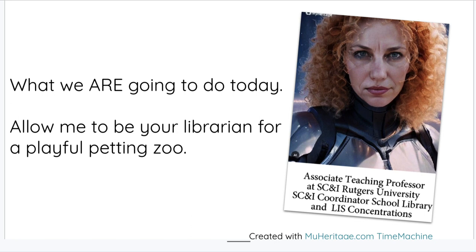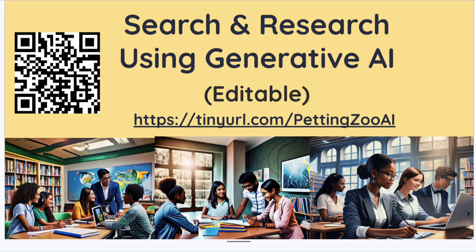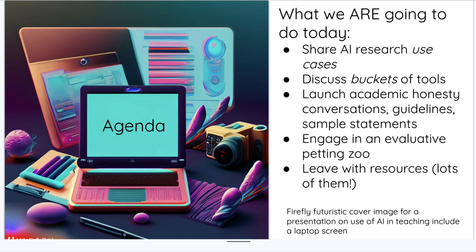I am going to be your librarian for a little bit of a petting zoo, which might happen after the lecture. You might be able to use what I'm going to share with you with your faculty and perhaps with some students. By the way, that image was made with an AI tool called My Heritage Time Machine. Today we're going to be sharing use cases, discussing buckets of AI tools, having a conversation about academic honesty, and I'll share that petting zoo and leave you with dynamic resources that I keep updating.